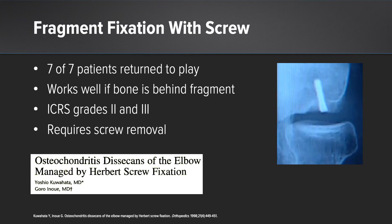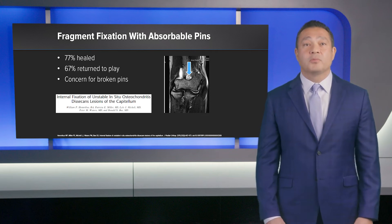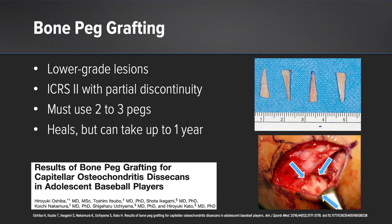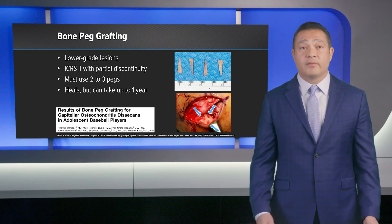Fragment fixation with a screw has been described; in one study, seven of seven patients were able to return to play. This works well if there's a large enough bone fragment behind the cartilage surface and the lesion is ICRS grade two or three, though screw removal may be necessary. Fragment fixation with absorbable pins has also been described; in one study, 77% healed and 67% returned to play, but there is concern of broken pins and loose body formation. Bone peg grafting has been described with successful outcomes in lower grade lesions (ICRS 2) using two or three pegs harvested from the proximal olecranon, though healing can take a very long time.